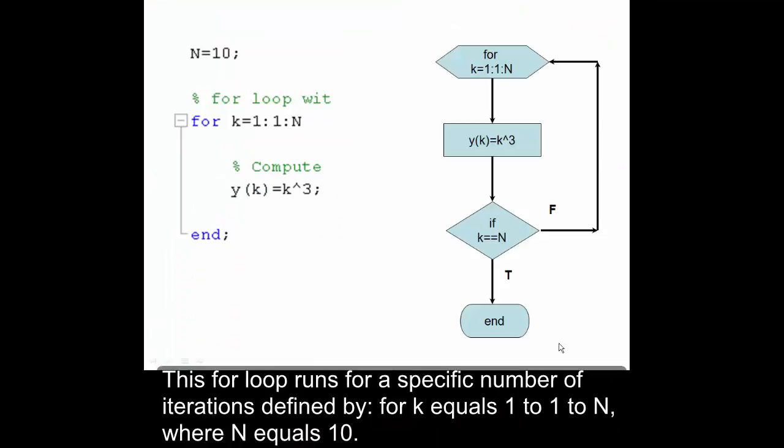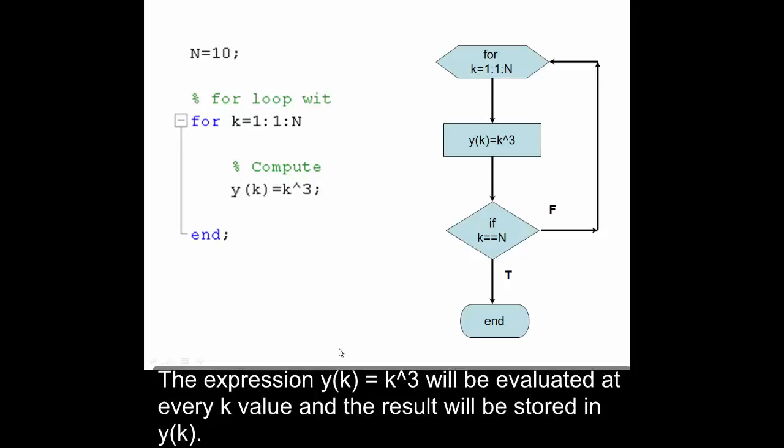This for loop runs for a specific number of iterations defined by for k equals 1 to n, where n equals 10. The expression y(k) equals k cubed will be evaluated at every k value and the result will be stored in y(k).